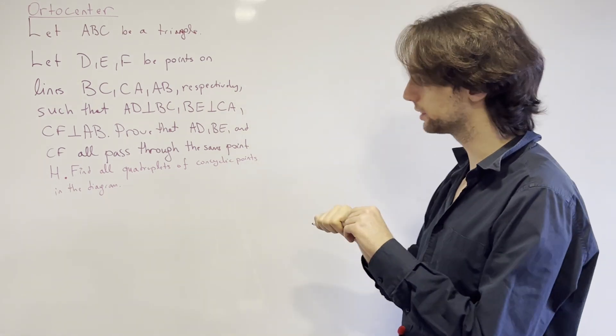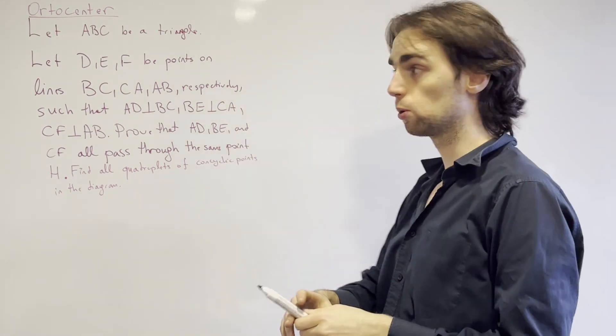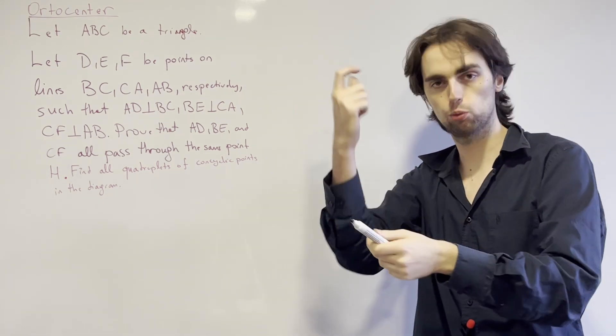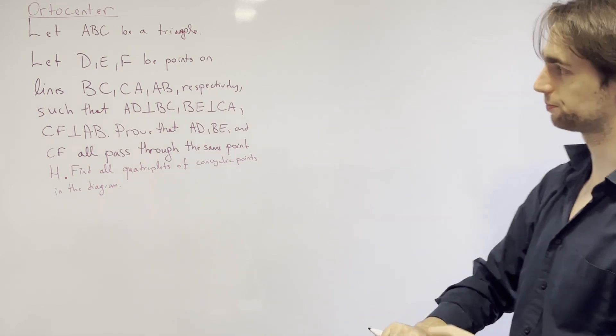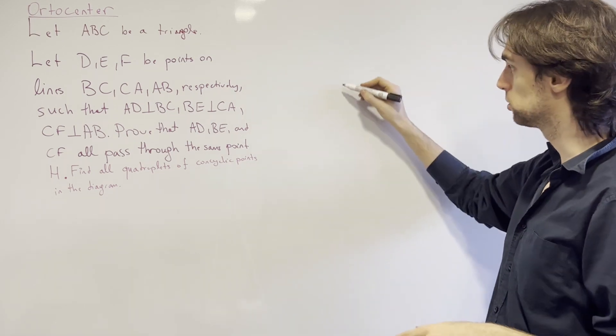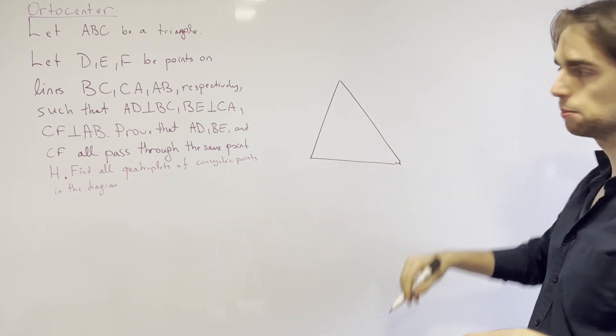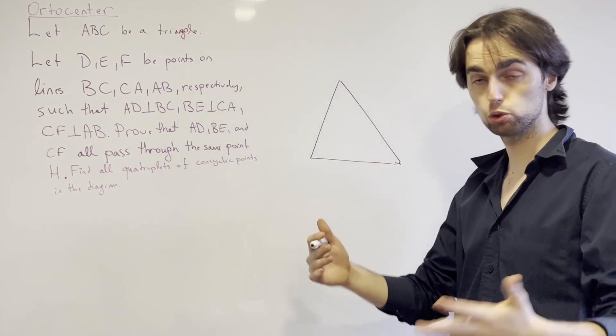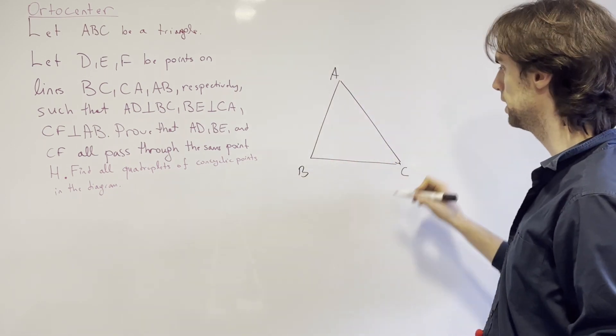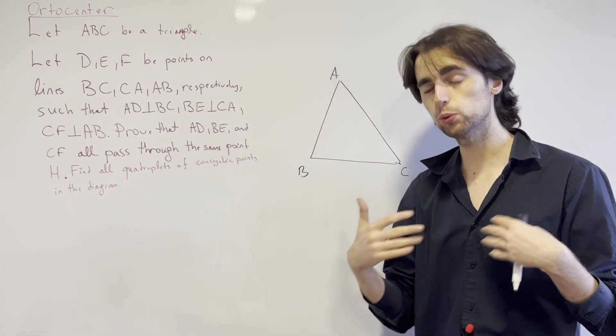So the idea behind this lesson is to show that the orthocenter exists, in other words that the heights of any triangle all intersect at one point called the orthocenter. And here we're going to look at first an acute triangle, acute angled, so that all the angles are less than 90 degrees. And then we'll talk about a right triangle and the obtuse one. So we have say ABC and we want to show that their heights all intersect at a single point. Now how do we do this?